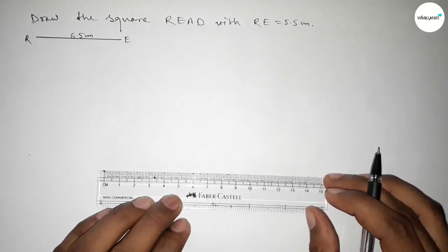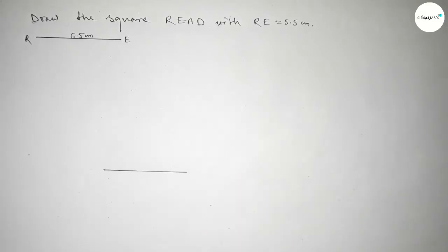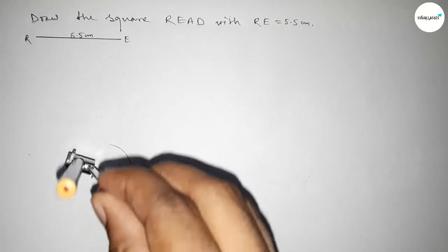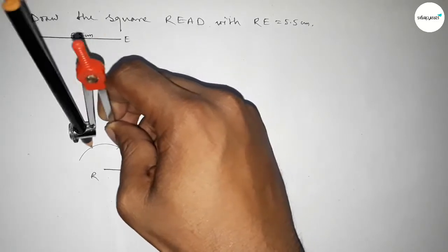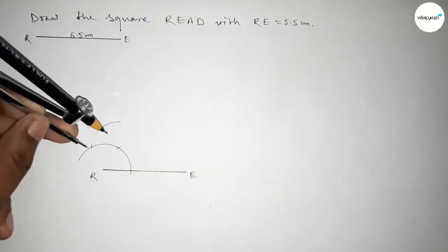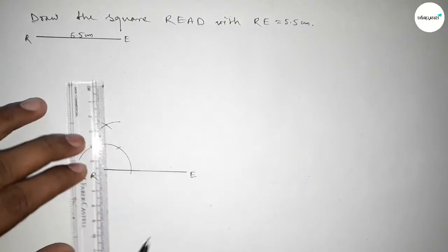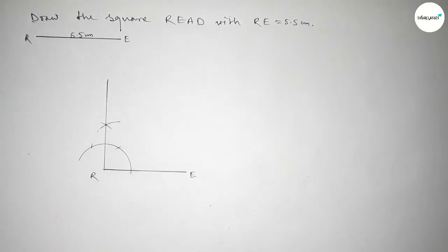Now we have to draw the line 5.5 centimeters again. Taking point R, we now have to draw a 90-degree angle on the point R. Putting the compass on point R, taking any length, and drawing an arc. Then putting the compass with the same length and cutting here, and putting the compass again and cutting here, drawing an arc. Both curves intersect at a point. Joining this line to get a 90-degree angle — so this is a 90-degree angle.